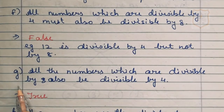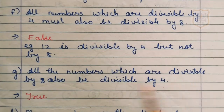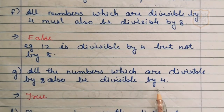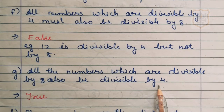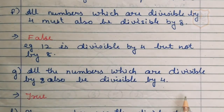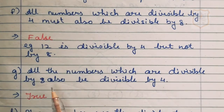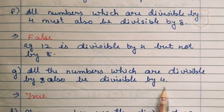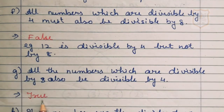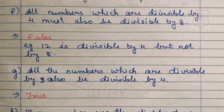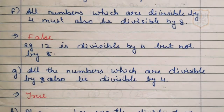Part G of question number 1: all numbers which are divisible by 8 are also divisible by 4. If a number is divisible by 8, it is also divisible by 4. The statement is true, as 16 is divisible by 8 and 16 is also divisible by 4.